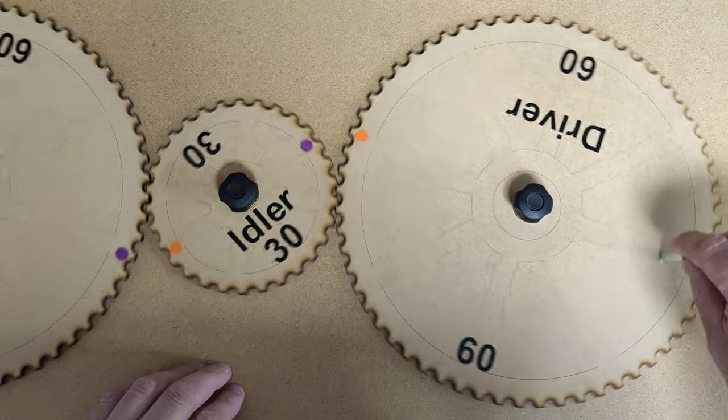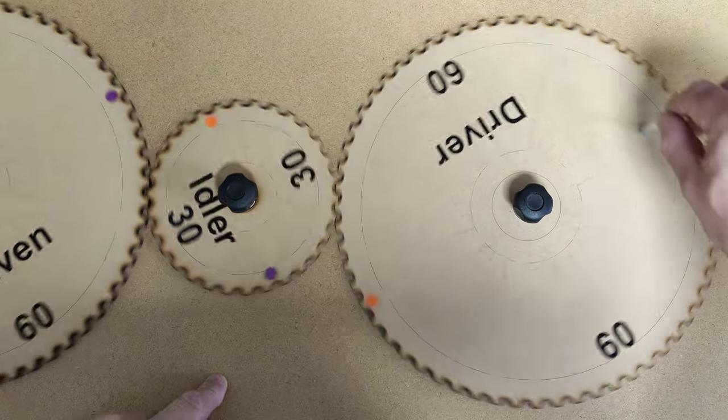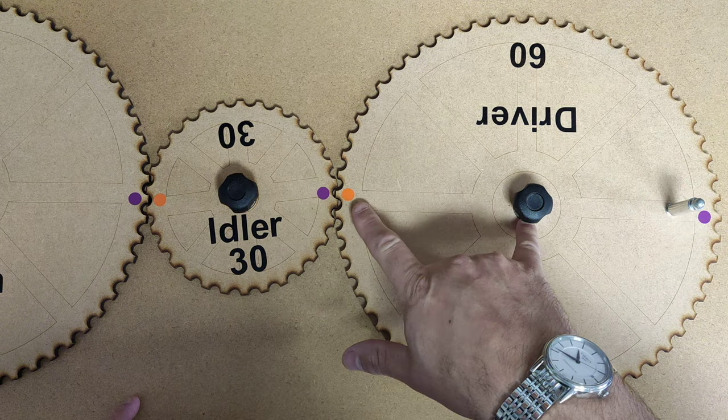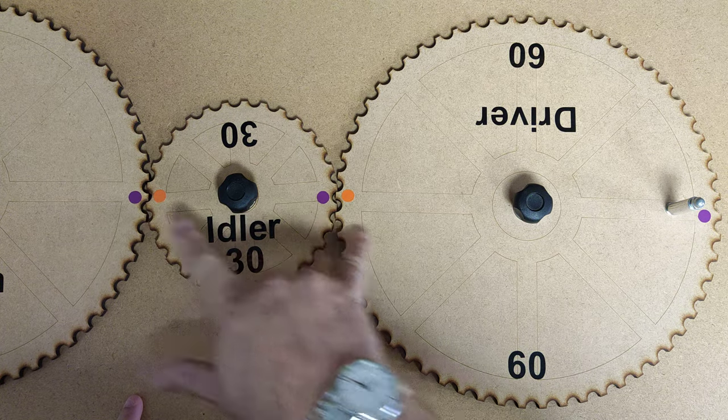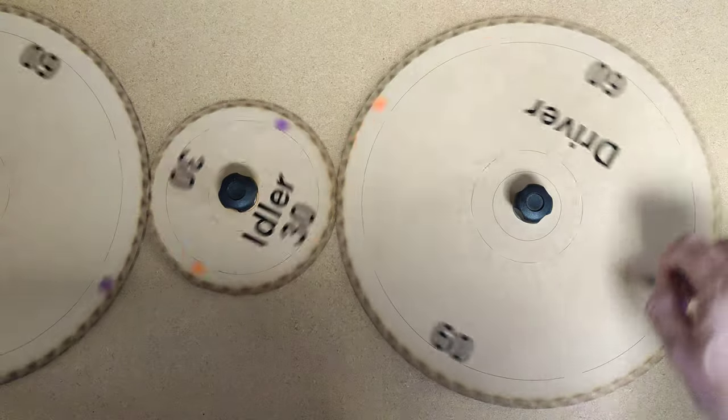If I want to change the speed of rotation, I just have different numbers of cogs, but obviously the forces then change. And this one, you can see if I do a rough measurement, that distance there is that distance there. So there you go, gears done very quickly in under two minutes.